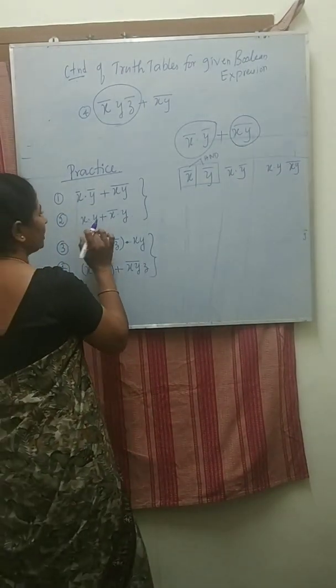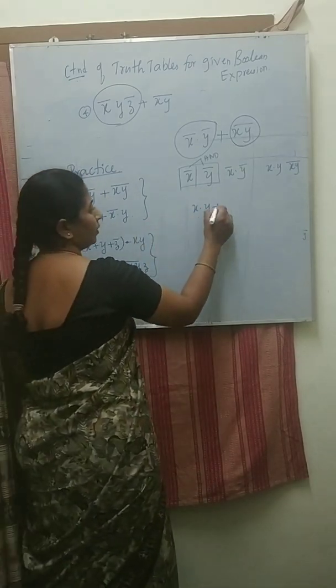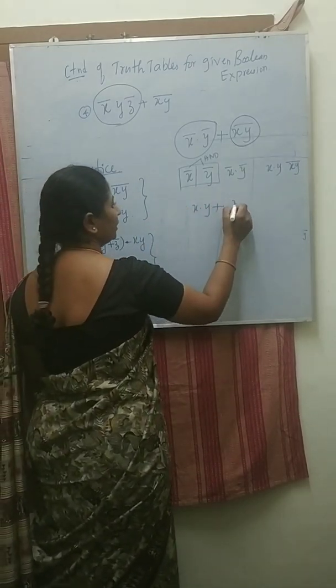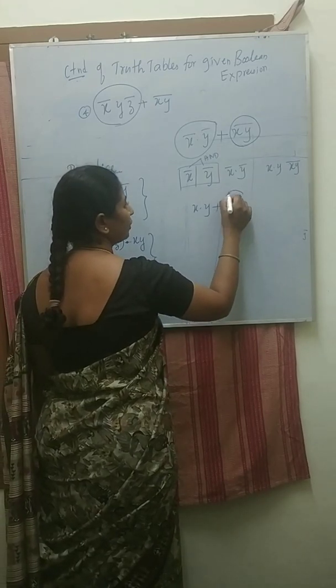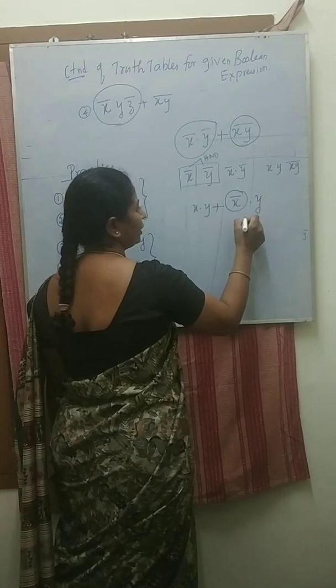According to the second expression, there is no problem with the XY. Then rest of the part, X bar is there. Then find the first X bar, then multiply with these two.